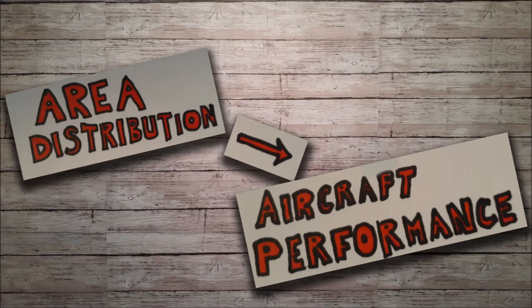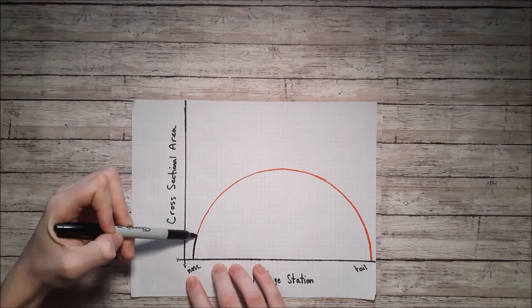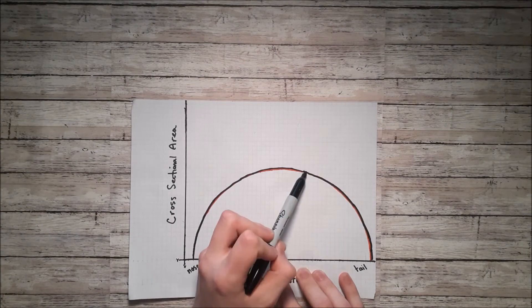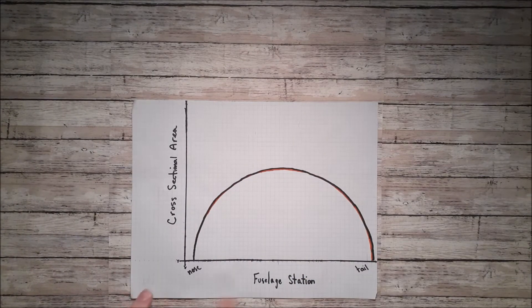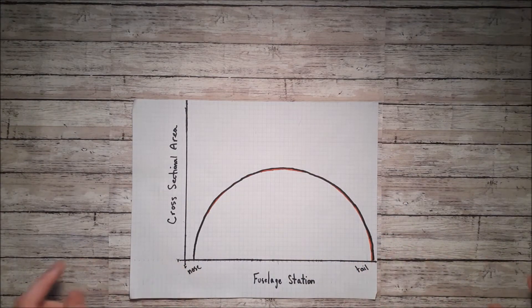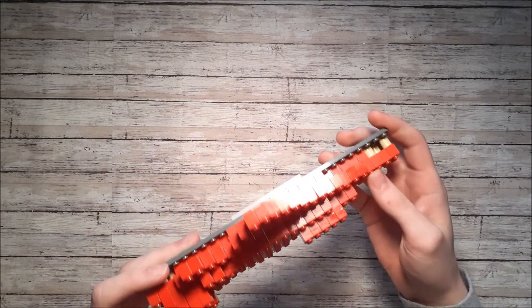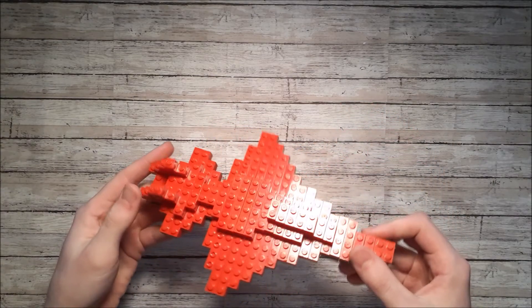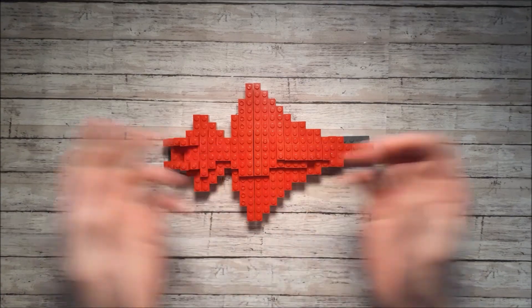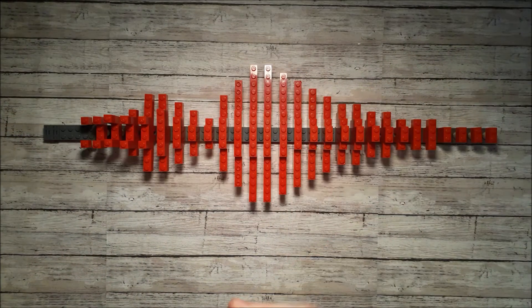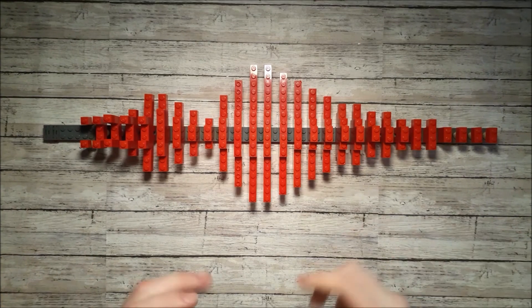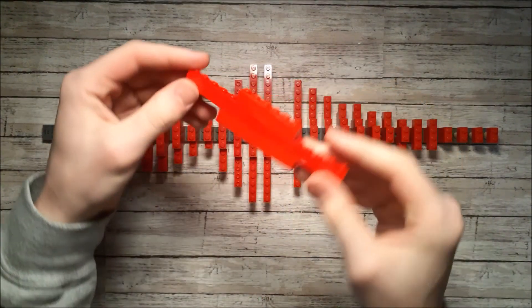We will first discuss area distribution, and then explain how an aircraft's performance can be loosely determined from it. Here is the ideal graph of cross-sectional area distribution. On the y-axis we have cross-sectional area, and on the x-axis we have the fuselage station — basically how far along you are on the plane, with the nose on the left and the tail on the right. To better visualize how the shape of the plane is translated to this graph, I have here an embarrassingly crude LEGO airplane. What I'm going to do is split it up into a series of cross-sections, like so. Now that the plane is all divided, I can measure the area of each one of these sections and then plot it on a graph.